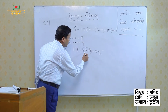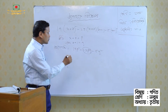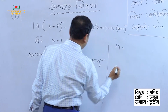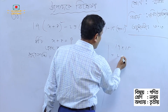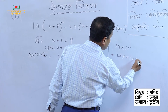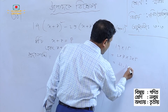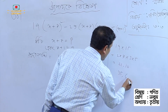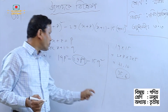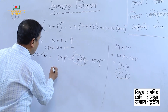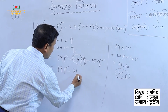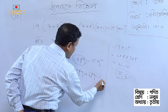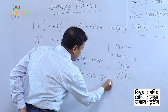This middle term break is done using 14P squared minus 29PQ minus 15Q squared. We have factors: 14 is 2 into 7, and 15 is 3 into 5. So 14P squared minus 35PQ plus 6PQ minus 15Q squared.